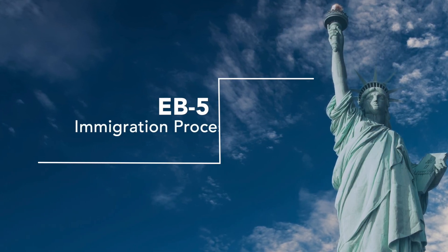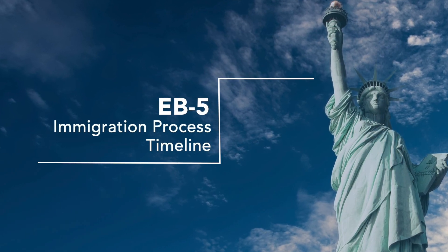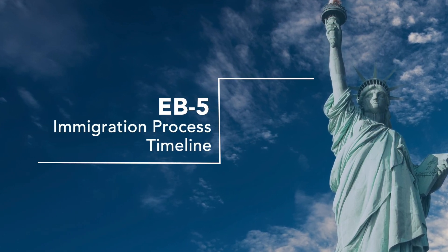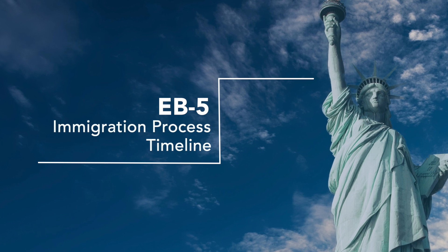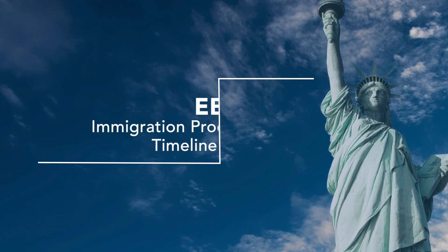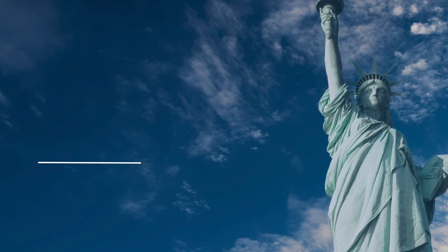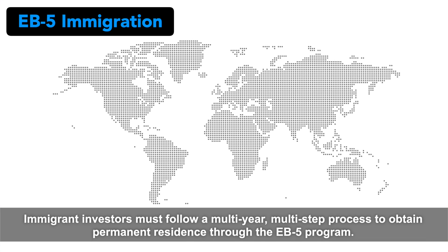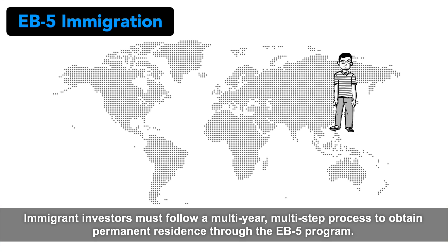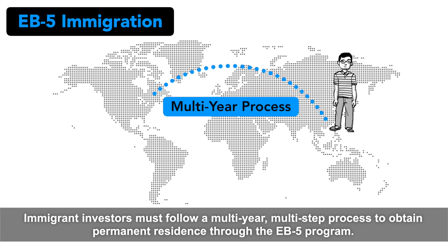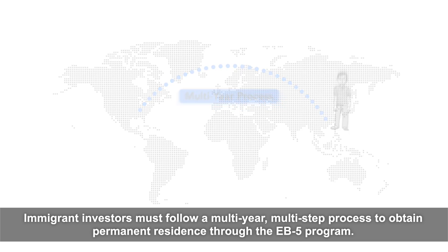EB-5 Immigration Process Timeline. Immigrant investors must follow a multi-year, multi-step process to obtain permanent residence through the EB-5 program.